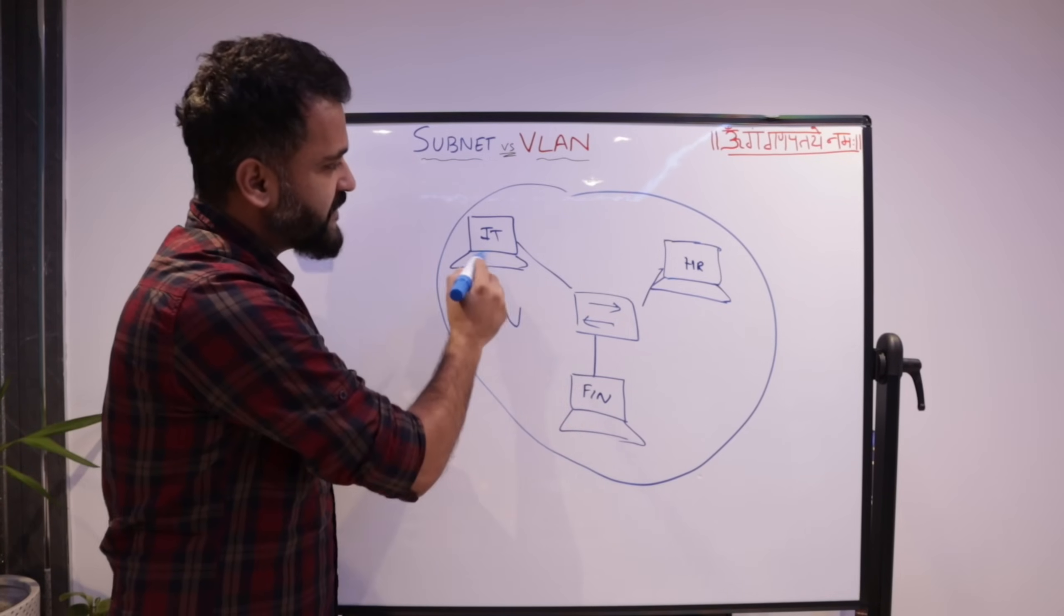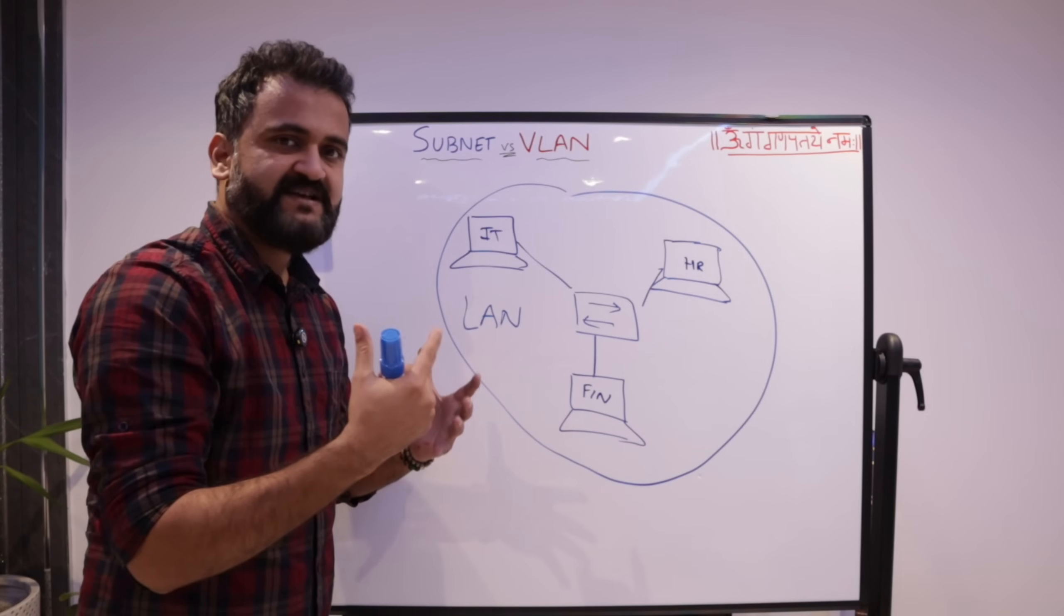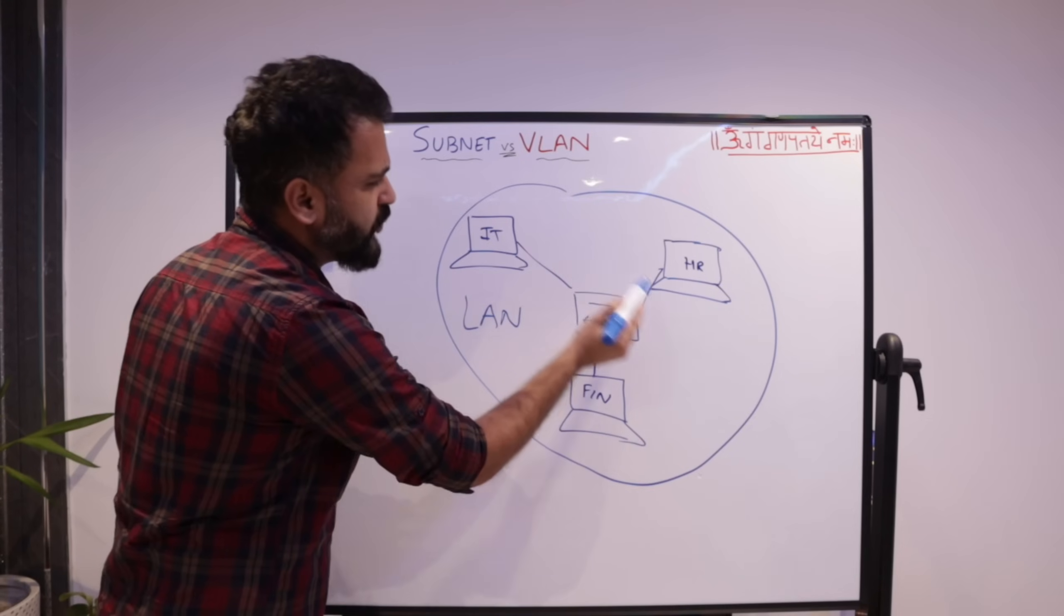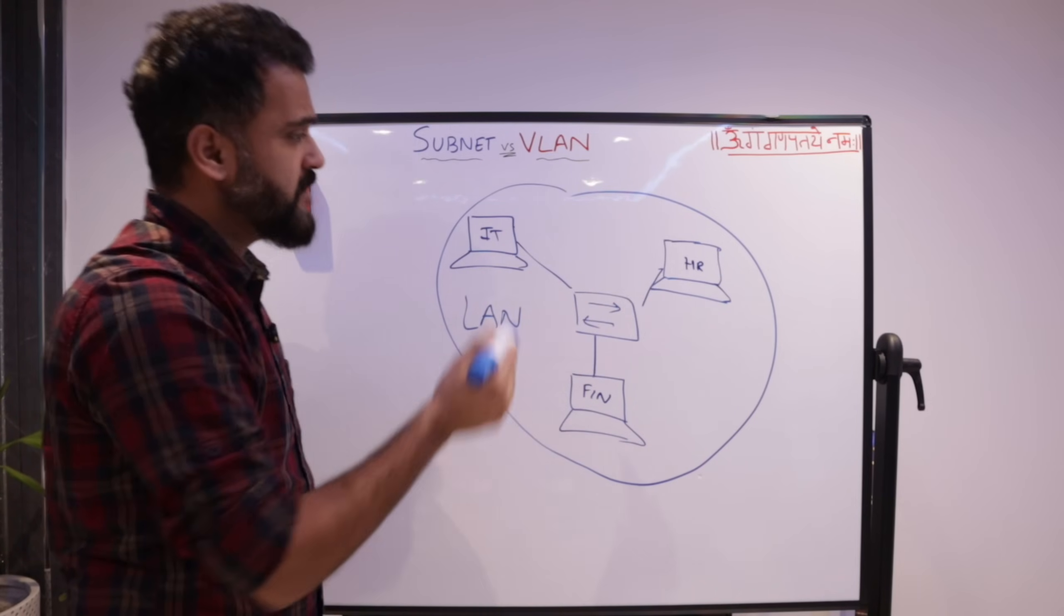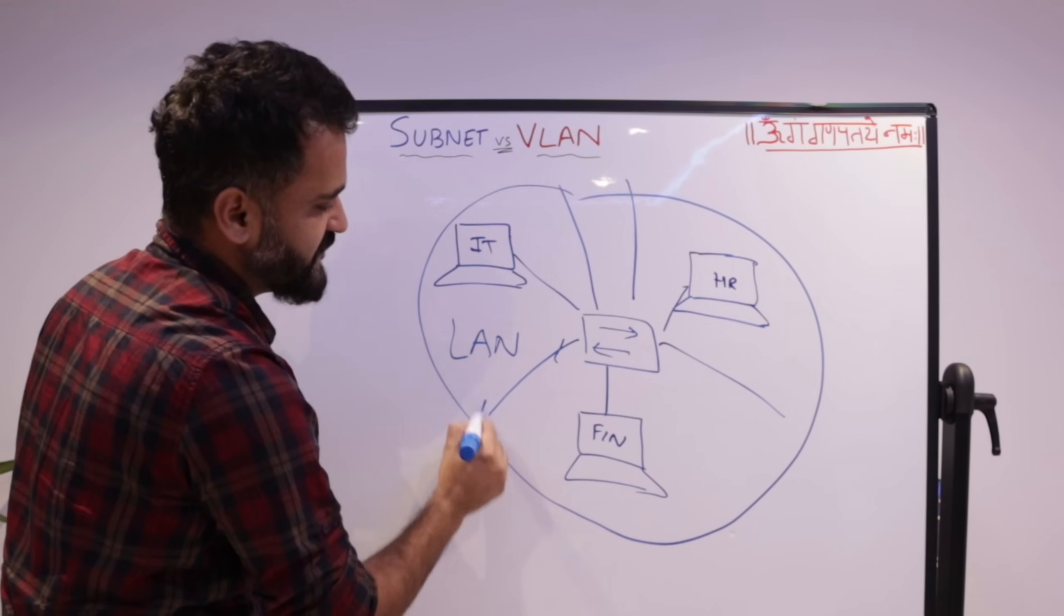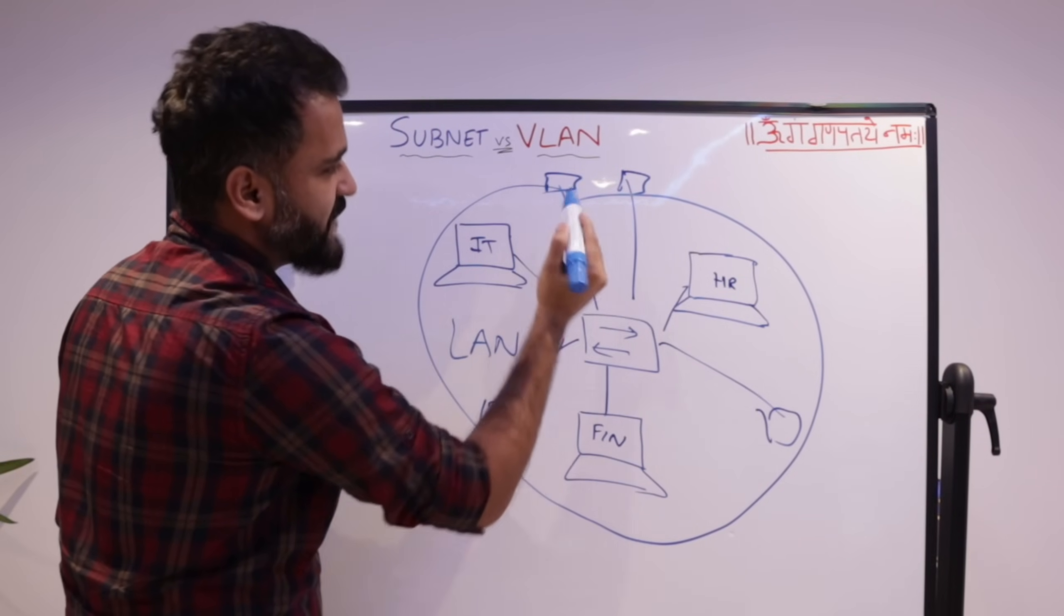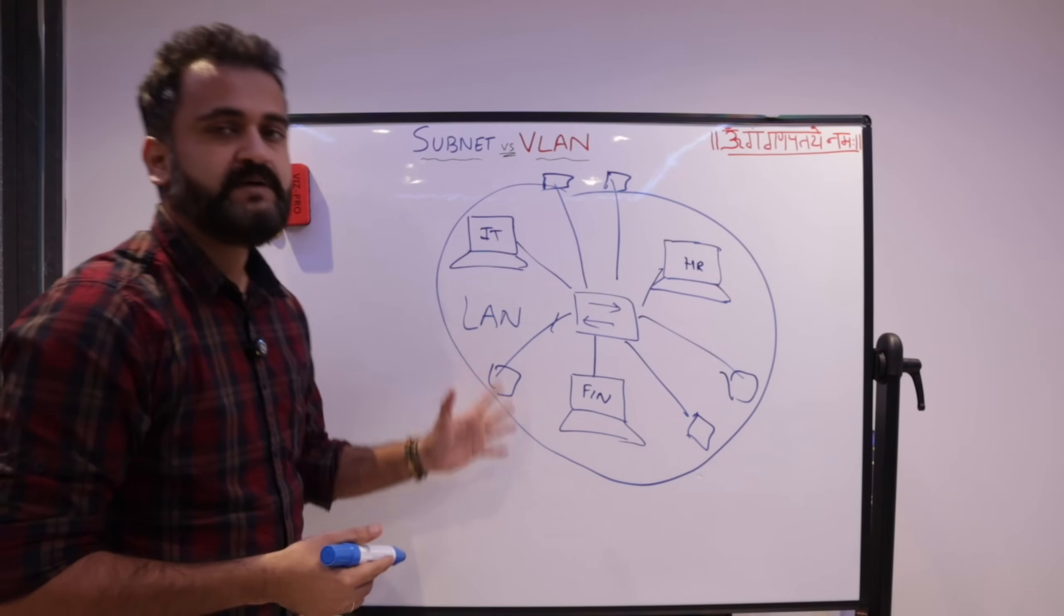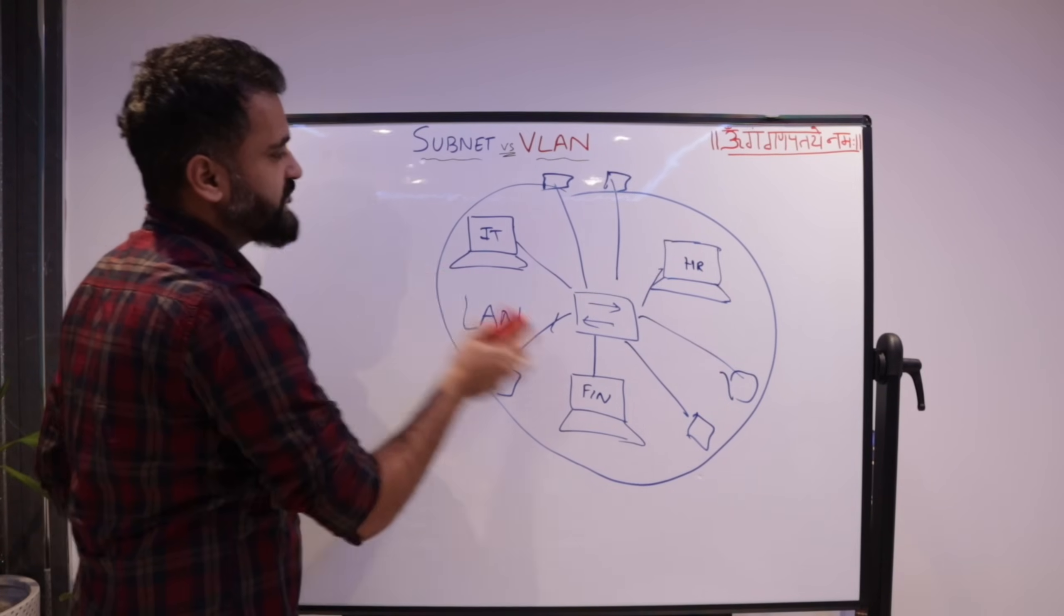Now this is okay. Because now whenever any device on this local area network has to broadcast a message, a broadcast message is basically a message which is sent to every device on that network, then obviously, if this device sends something, it will be either to this device or it is manageable. But what if this startup grows to a very medium to large scale company, there will be so many people, so many networks, so many devices coming into this one particular network, and then managing this would be chaos. And that's where came the concept of subnetting.